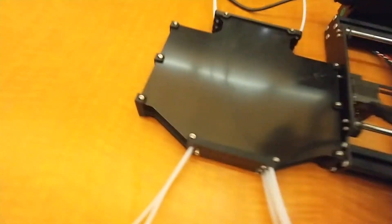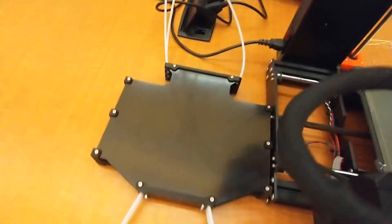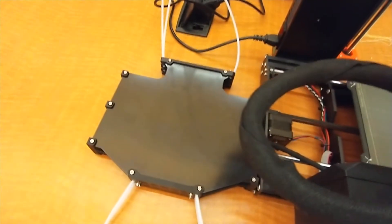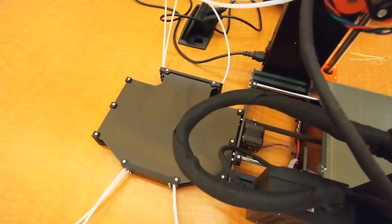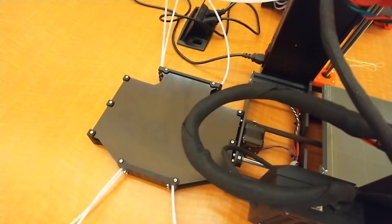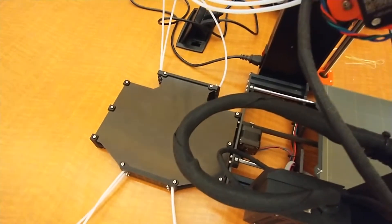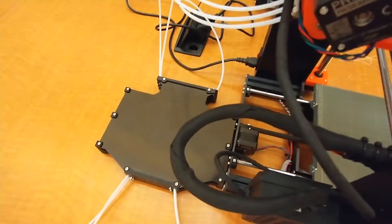This is part of the MMU called a buffer, and this just helps when it's changing filaments. It needs this as a place where the filament doesn't get tangled as it's getting unloaded and loaded.